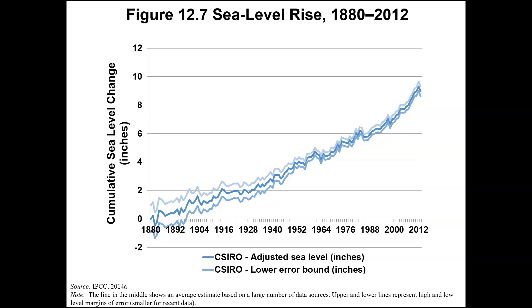At the same time that temperatures rise, we also have sea level rise. Glaciers and ice in the ocean are melting, and oceans are then rising. This graph shows how much sea levels have risen over time, starting at a zero level of 1880, showing how much higher sea levels have been relative to that point. The trend is clearly trending up — sea levels are rising.